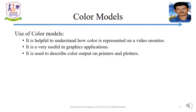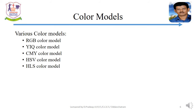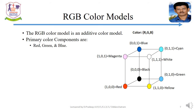Color models are used to describe color output on printers and plotters. Various color models are listed here. The RGB color model is an additive color model. The primary colors are red, green, and blue.